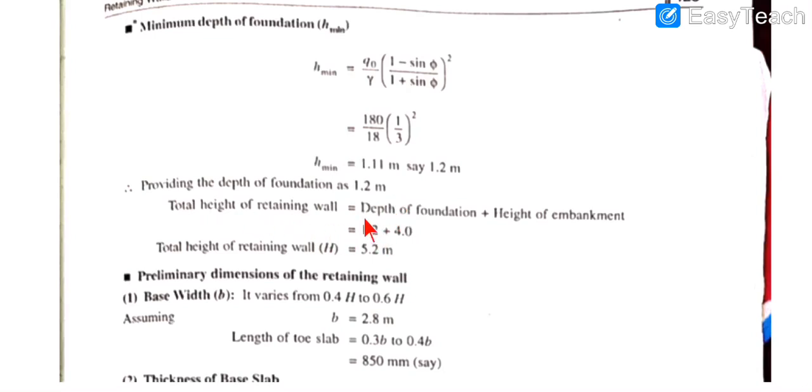So we will provide 1.2 m depth of foundation. Therefore, the total height of the retaining wall will be 4 m (the height it has to retain) plus 1.2 m foundation depth, giving a total height H = 5.2 m.